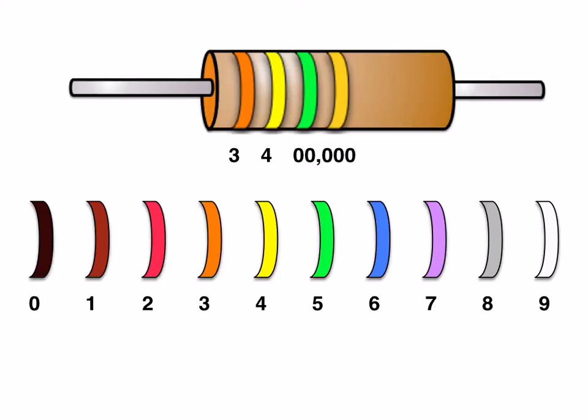So that would be 3,400,000 ohms. The gold stripe means that the resistor could be off by up to 5%. For now, you could ignore this. The way you'd write this, 3.4 million or 3.4 mega ohms.